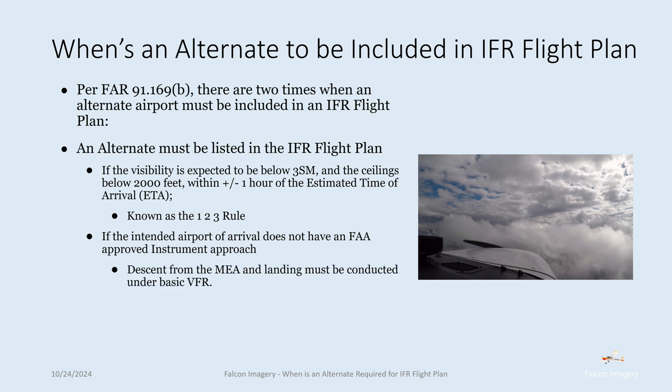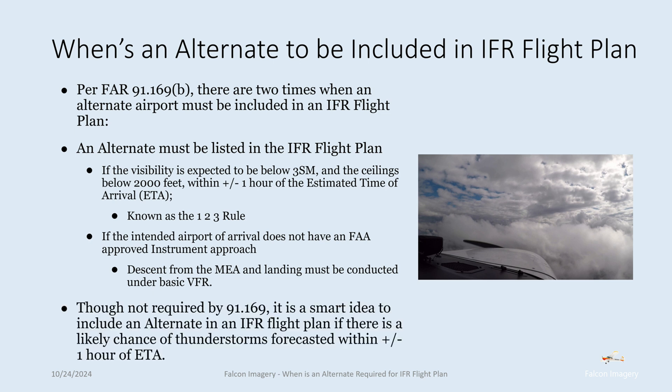If we plan to land at an airport that doesn't have an instrument approach, we can only descend below the MEA and land if we can conduct it in basic VFR conditions. Otherwise, we have to go to our alternate airport. Though not required by 91.169, it's also a smart idea to include an alternate in an IFR flight plan if there is a likely chance of thunderstorms forecasted within plus or minus one hour of the estimated time of arrival at the intended airport.